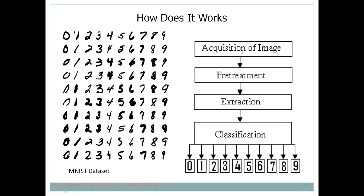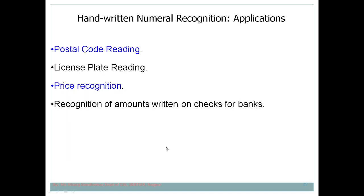The pipeline involves image acquisition, pre-processing to bring the dataset into the appropriate format, and feature extraction — manual in machine learning, automatic in deep learning. Finally, we classify the given number as 0 through 9. Digit recognition is a multi-class classification problem where we train the model on handwritten digit images from 0 to 9 and then ask it to recognize a given input digit.